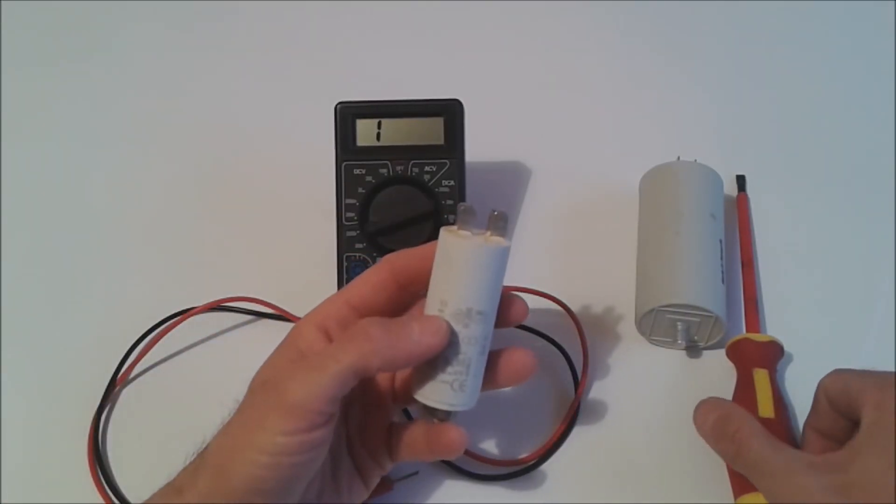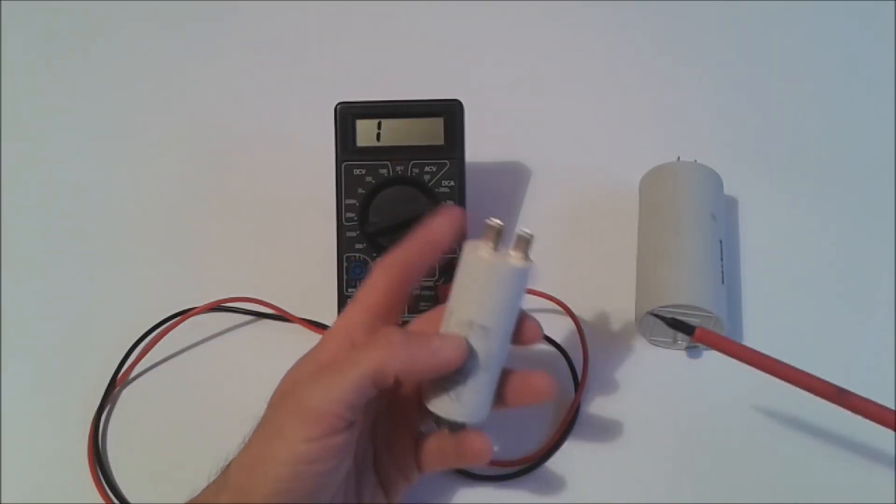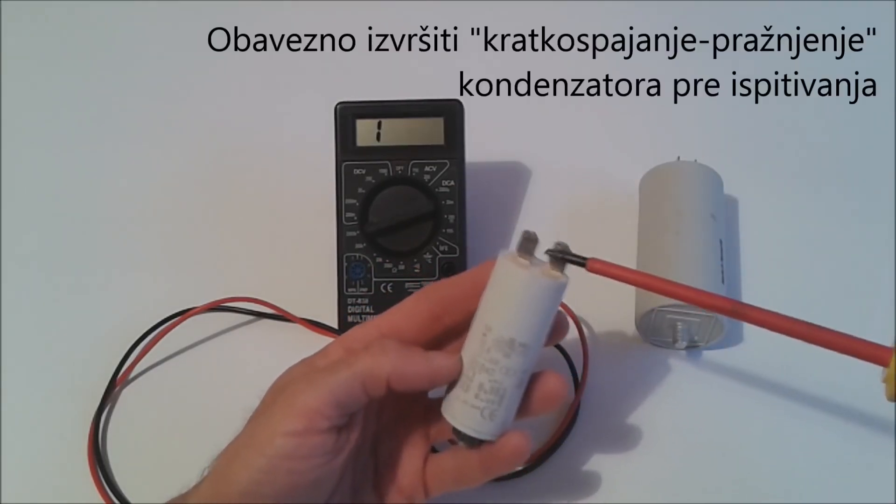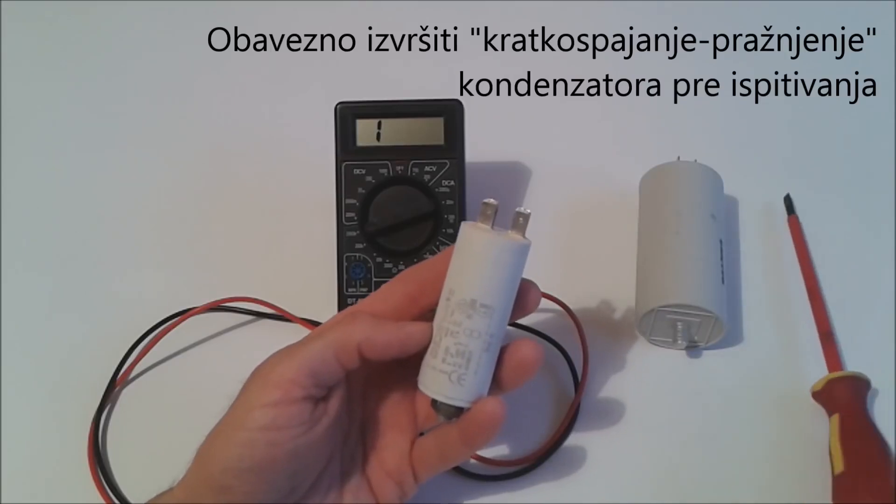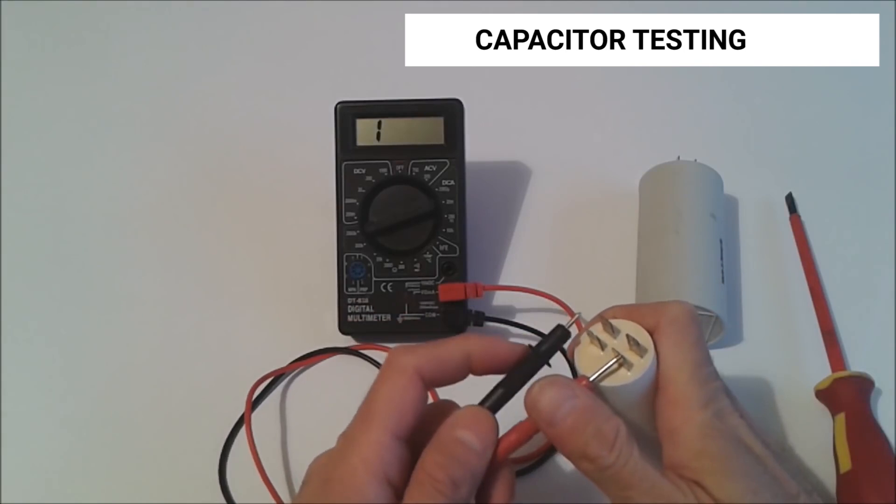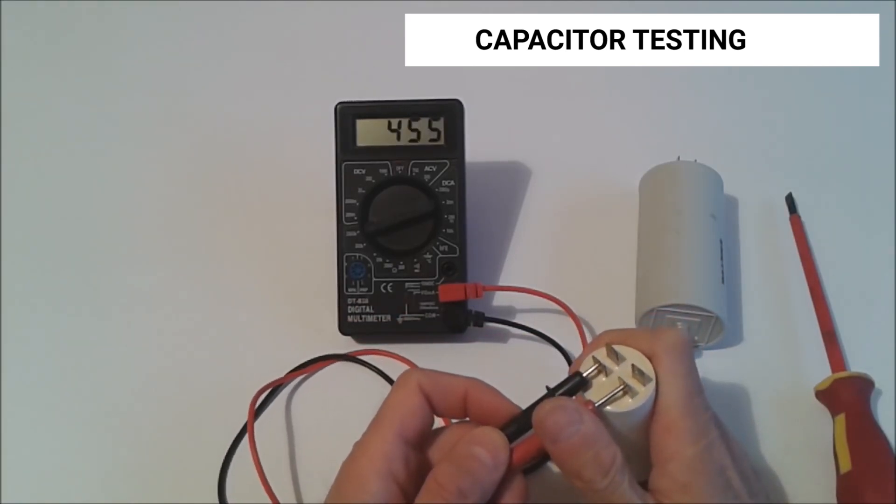Before connecting the multimeter to the capacitor, we should short-circuit the contacts of the capacitor because if the capacitor is charged, it could damage our multimeter. Now we connect the measuring cables to the capacitor contacts and let's see what appears on the display.